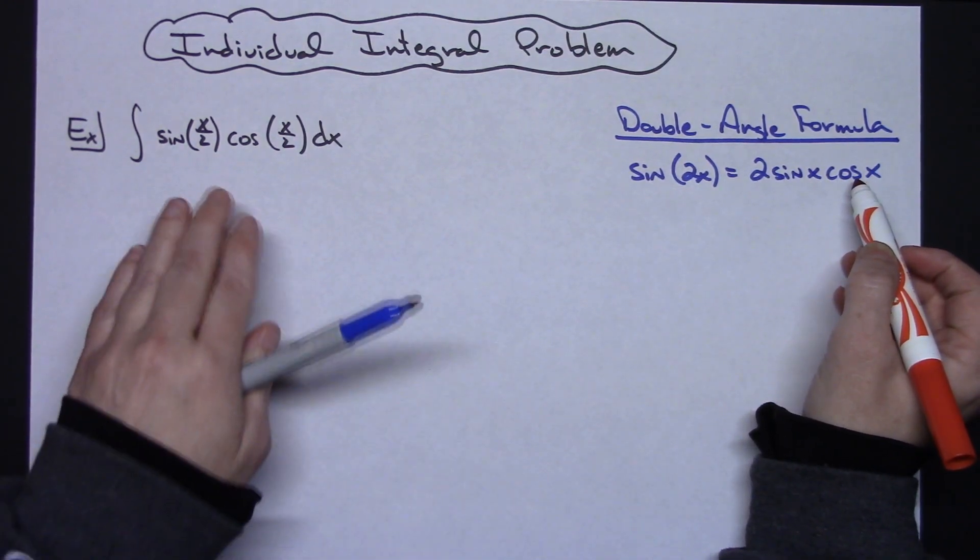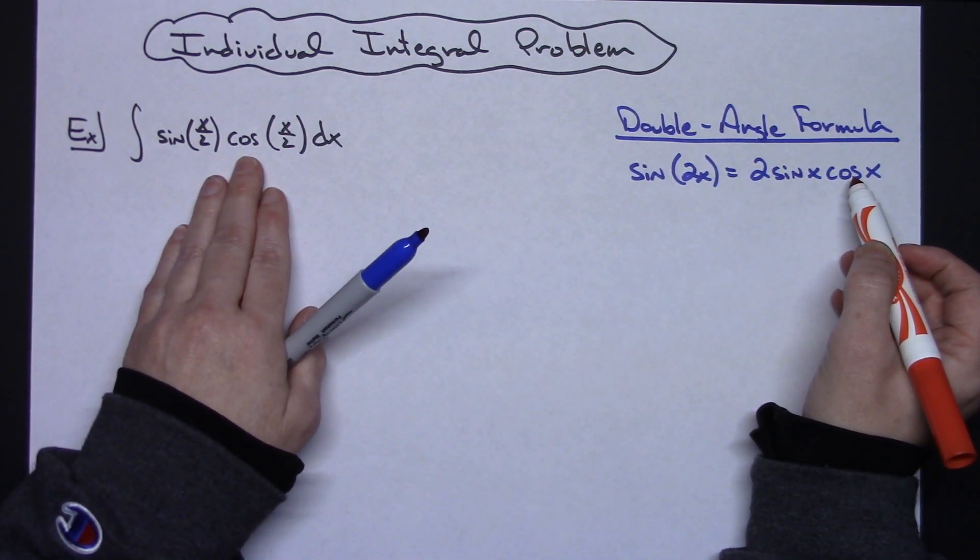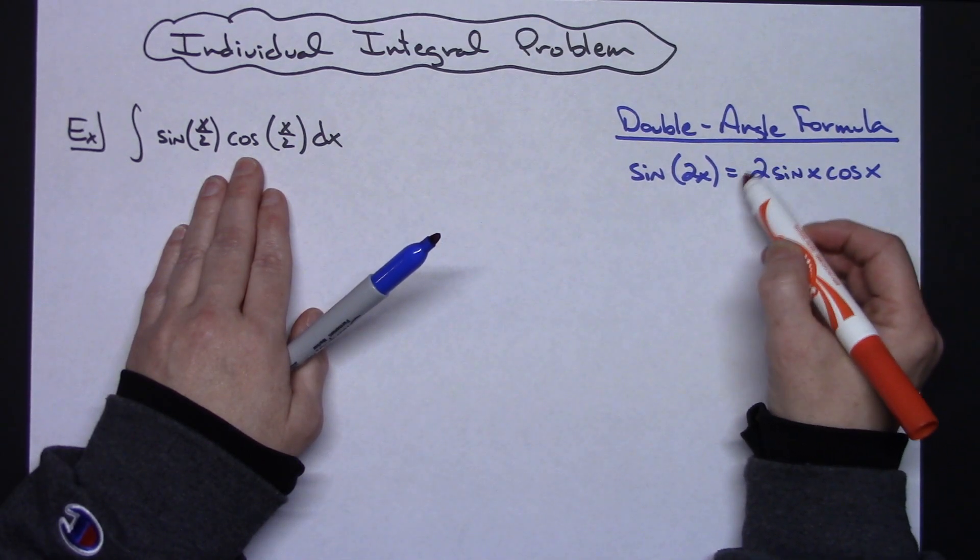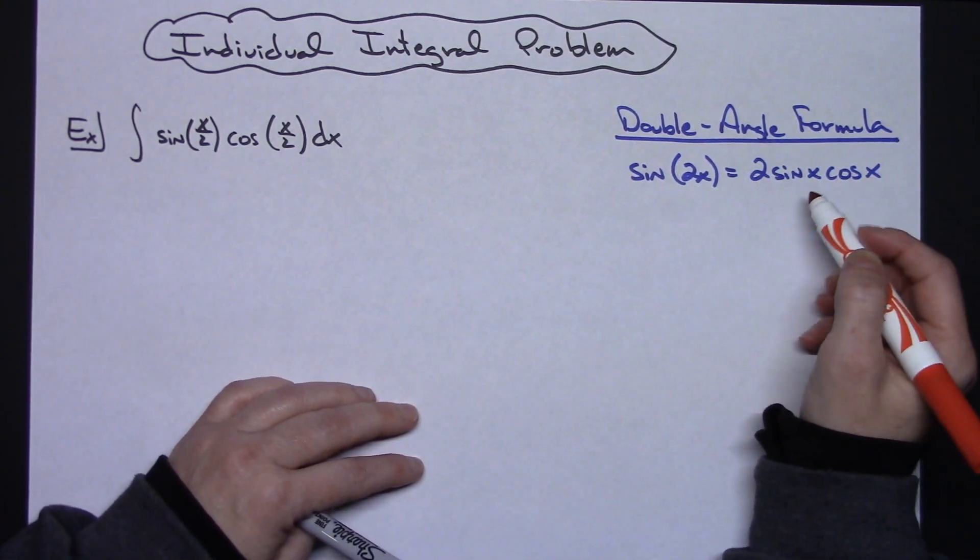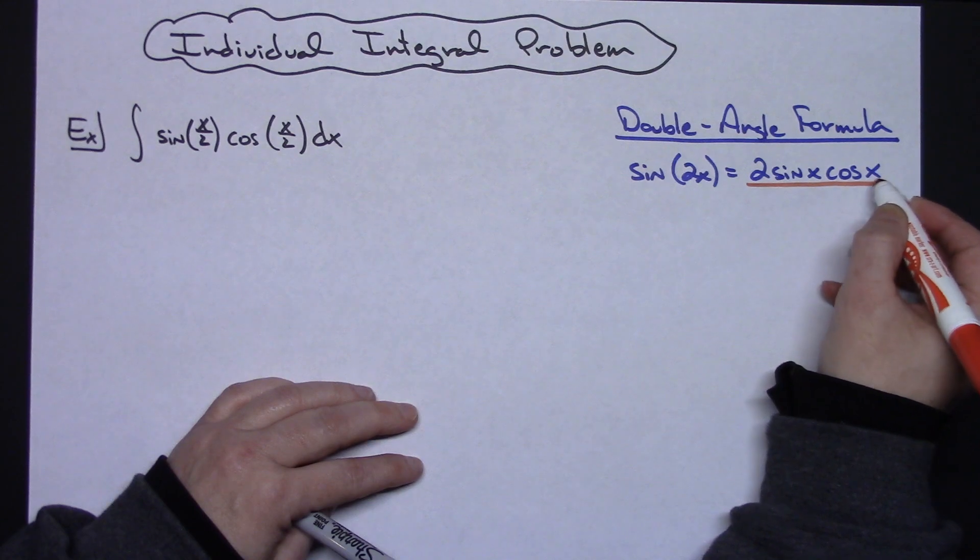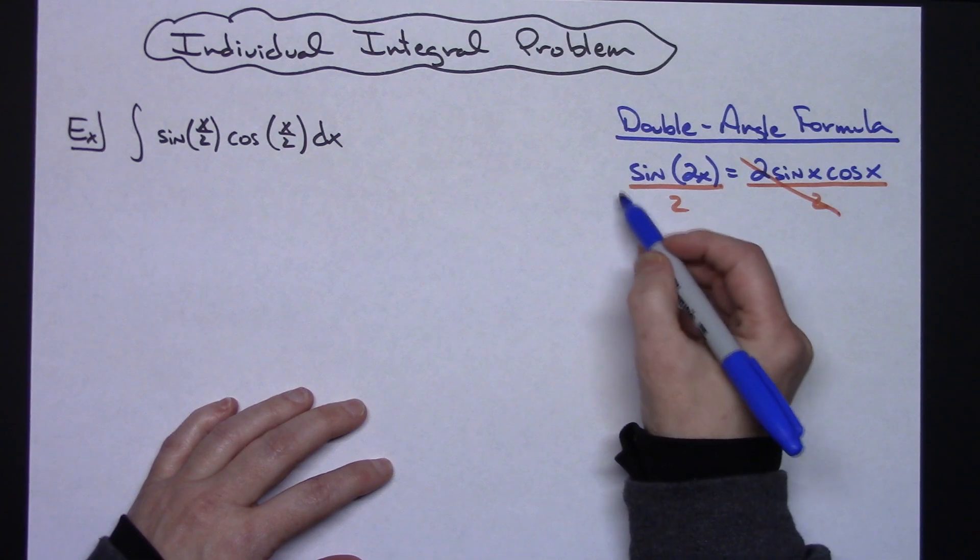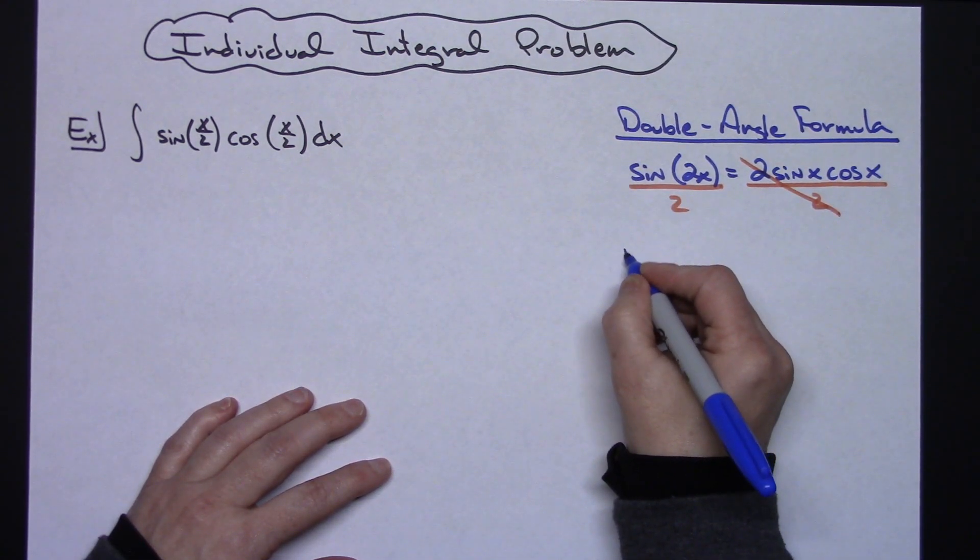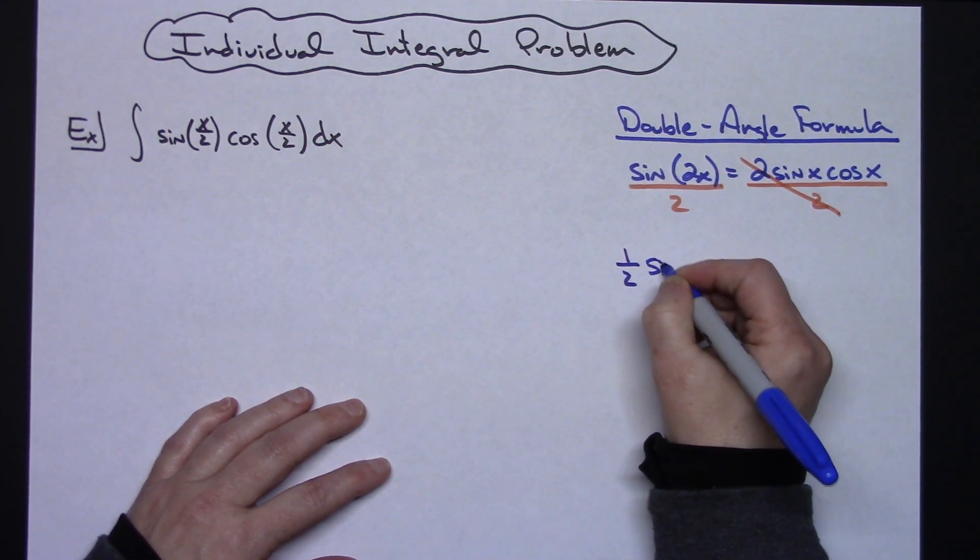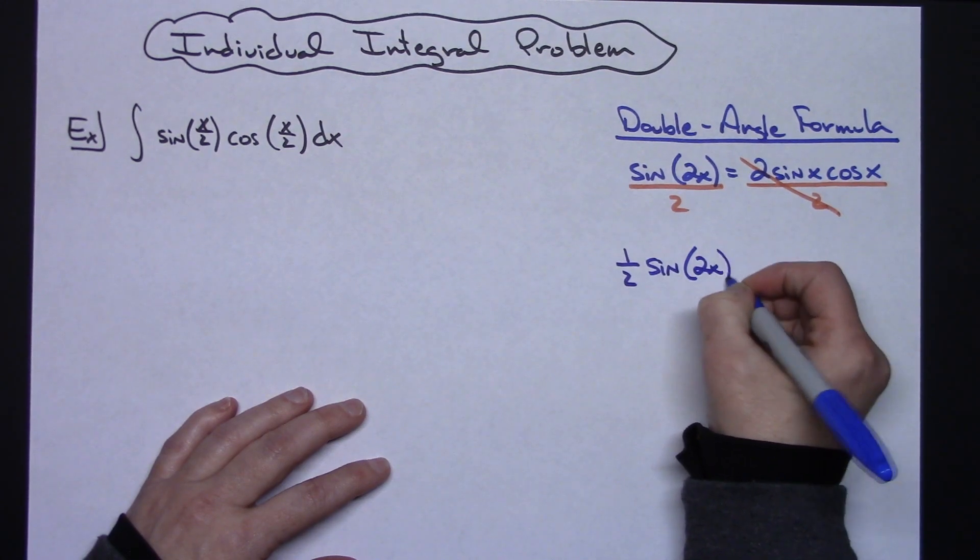Alright so to begin with, I just have a sine times a cosine so that 2 is creating a problem. I'm going to manipulate this by dividing both sides of this equation by 2 so those 2's go away. Now I'm going to rewrite this as (1/2)sin(2x).